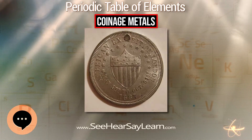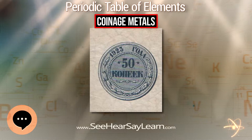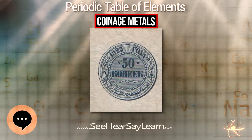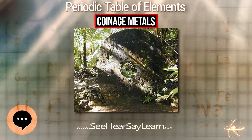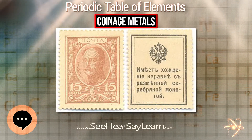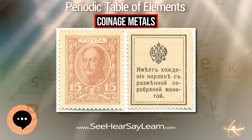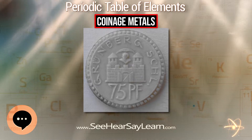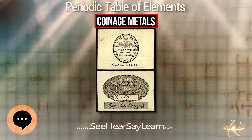Chemical elements have also been used in non-circulating coins, metal patterns, and trial strikes. Beginning in 2006, Dave Hamrick has been attempting to strike coins of every primordial chemical element. To date, he has struck tokens of the following elements.